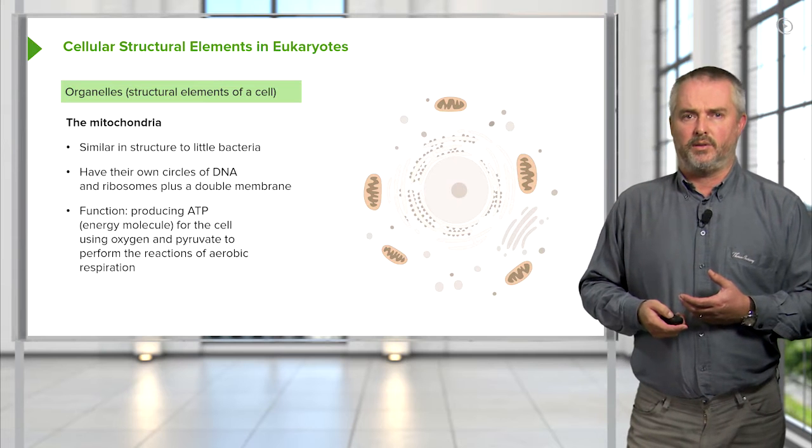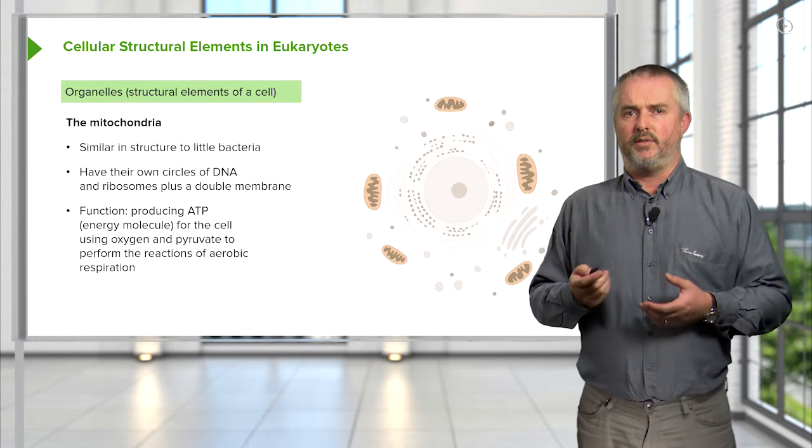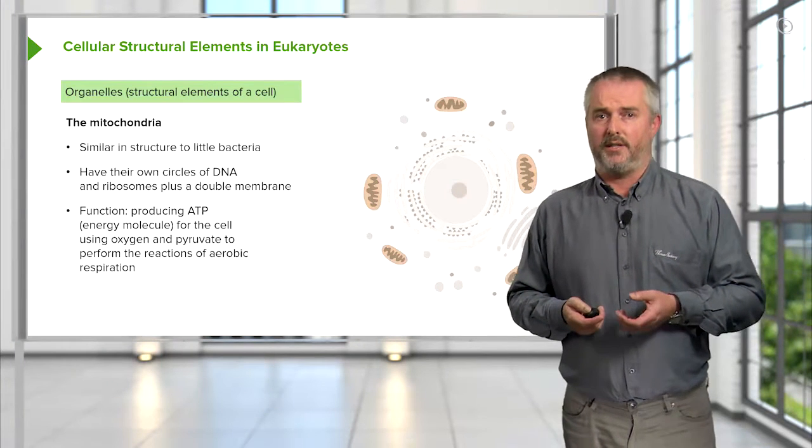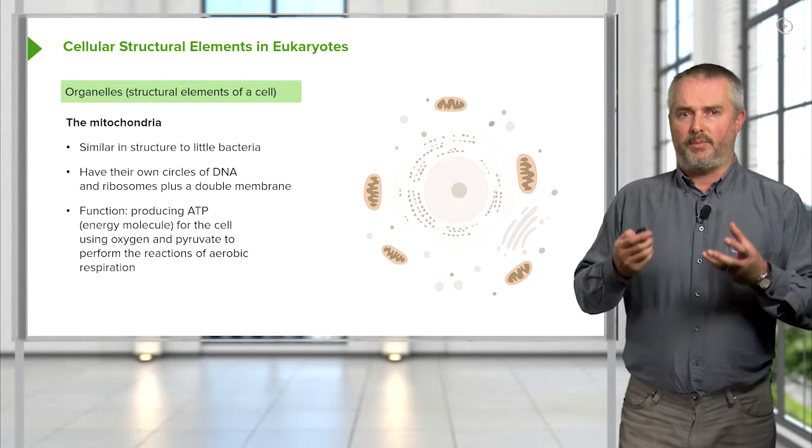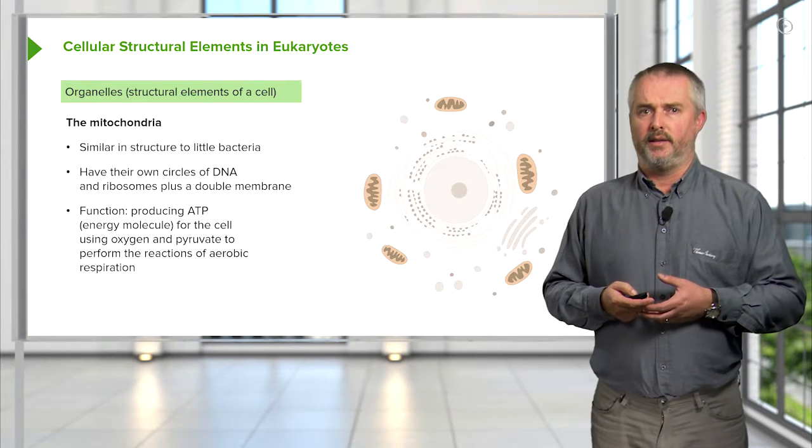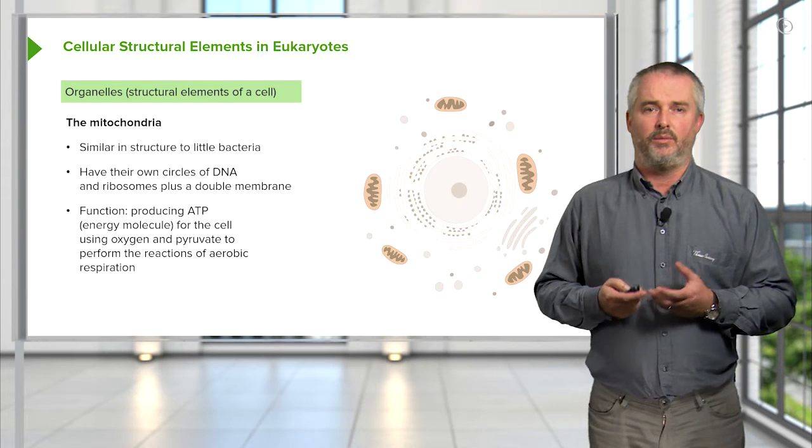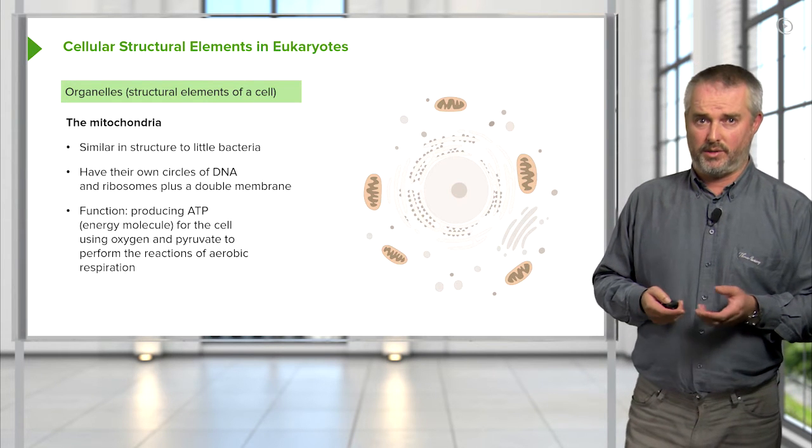Mitochondria have their own circles of DNA and their own ribosomes, actually, and a double membrane, which is important for their chemical function to produce ATP, one of the few universal molecules in biology present in all living things, the energy molecule that helps the cell do what it does.